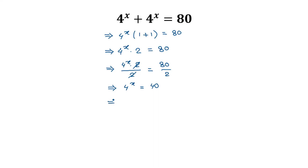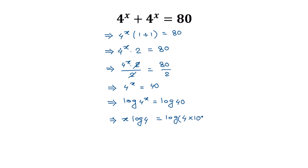Now taking log of both sides, we get log of 4 to the power x is equal to log of 40. This can be written as log of 4 times 10, since 4 times 10 equals 40.